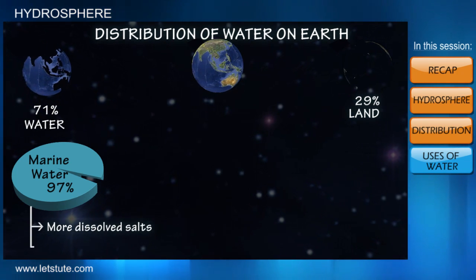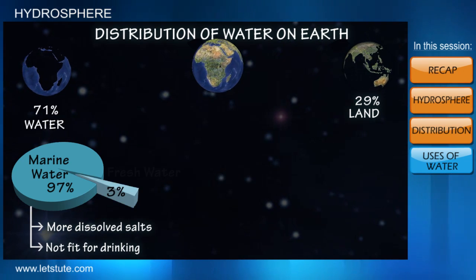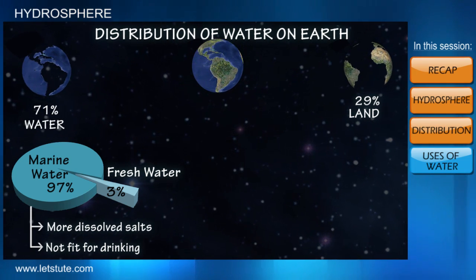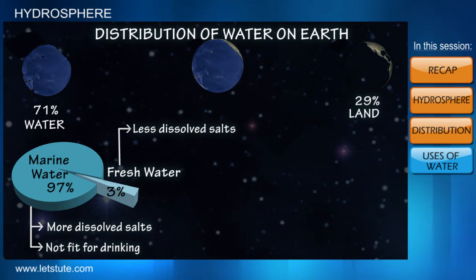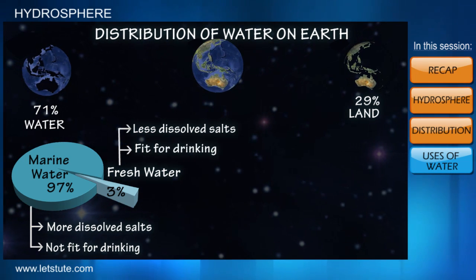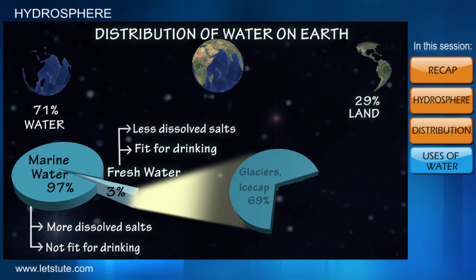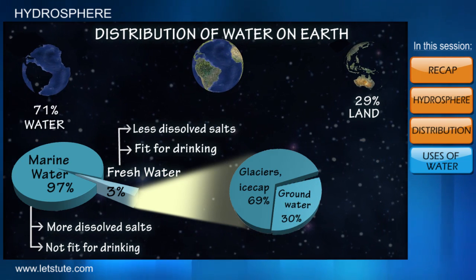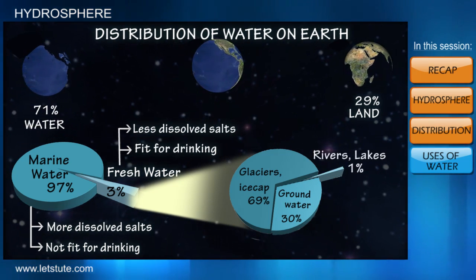Because of its high salt content, saline water is not fit for drinking. The remaining 3% is fresh water — we call it fresh water because the dissolved salt content is very less, and that is why it is fit for drinking. Of the total fresh water, the major part is locked in glaciers and ice caps, followed by underground water, and just a small amount is located in rivers and lakes.